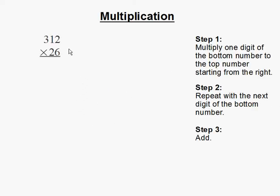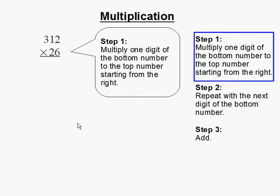Multiplication. In this problem we have 312 times 26. Step 1: Multiply one digit of the bottom number to the top number starting from the right.